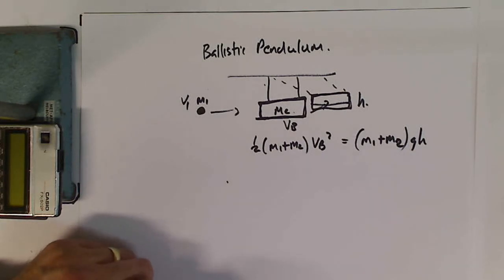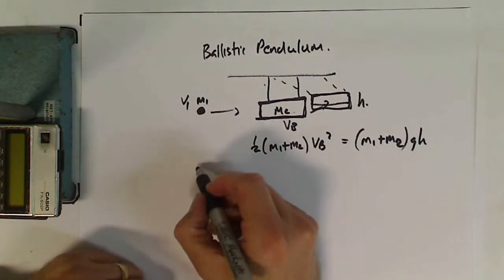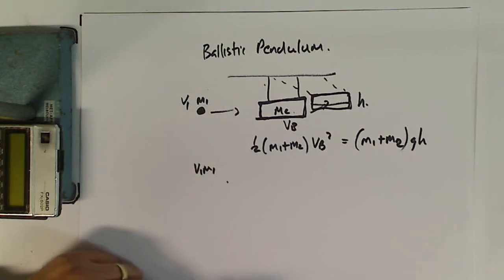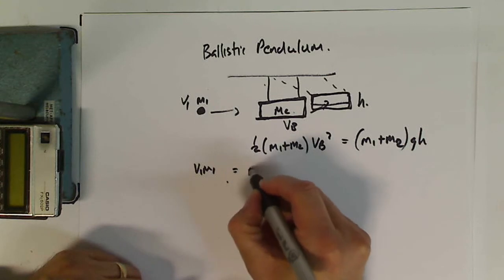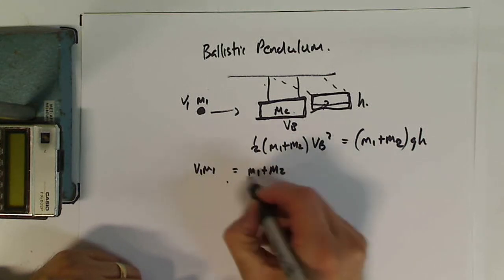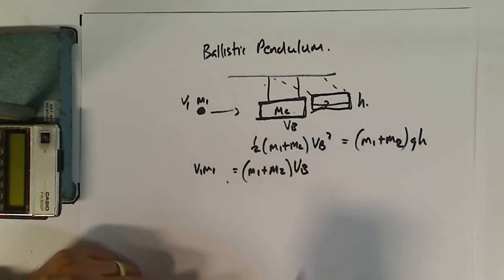I think we can also go back to the initial collision and say that v1 m1—total momentum because the block's not moving—is going to be equal to (m1 plus m2) times vb. That's the total momentum of the block after the bullet has hit it.